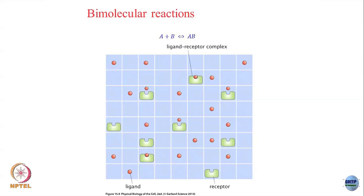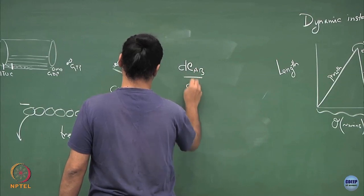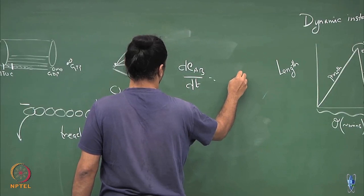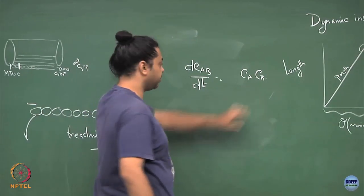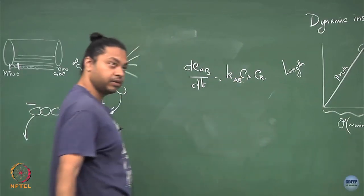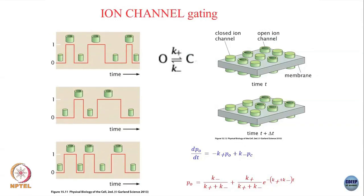I could also think of slightly more complicated reactions, like ligand-receptor complexes. If I have two molecules — a ligand and a receptor — that interact to form a ligand-receptor complex, I could write down equations for the concentrations of free ligands, free receptors, and the ligand-receptor complexes. For example, d[C_AB]/dt depends on the product of the concentrations of A and B and some rate constant k_AB. These are things we have looked at using a two-state language for ligand-receptor complexes and ion channels, but we can equivalently frame them in terms of kinetics.